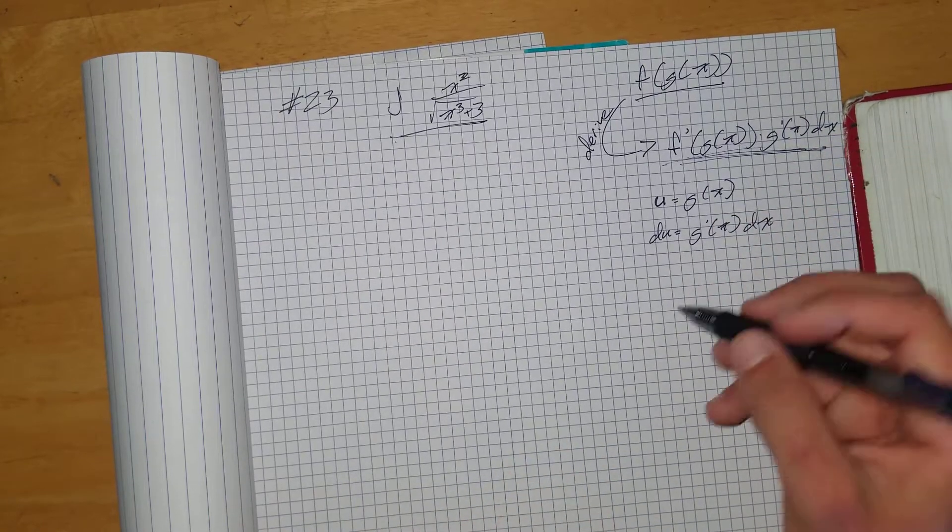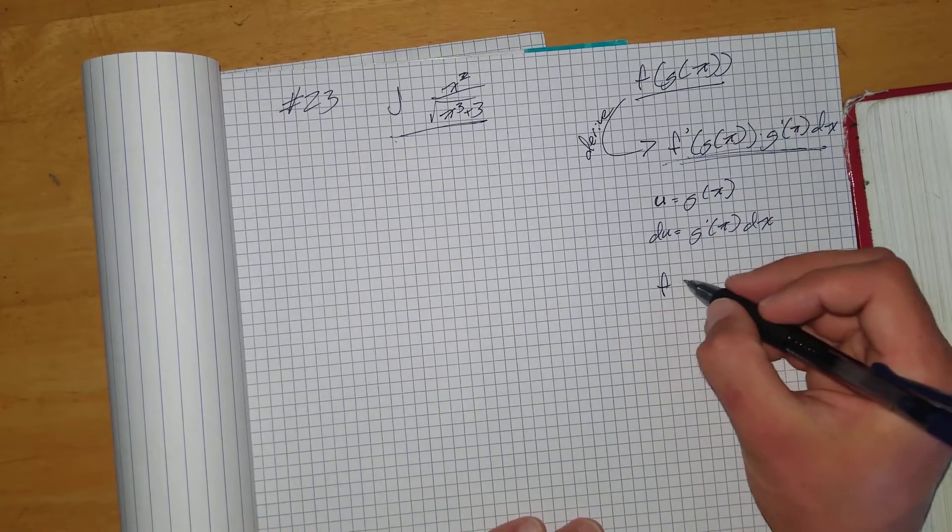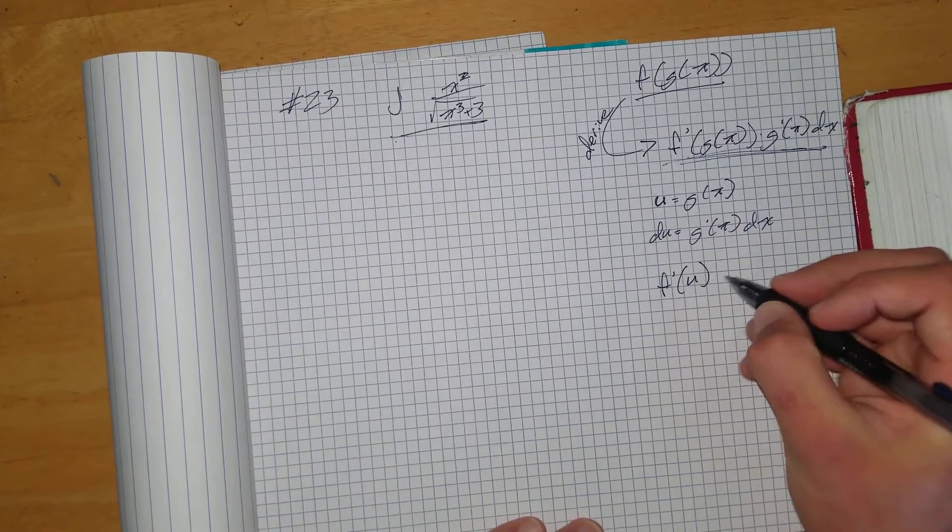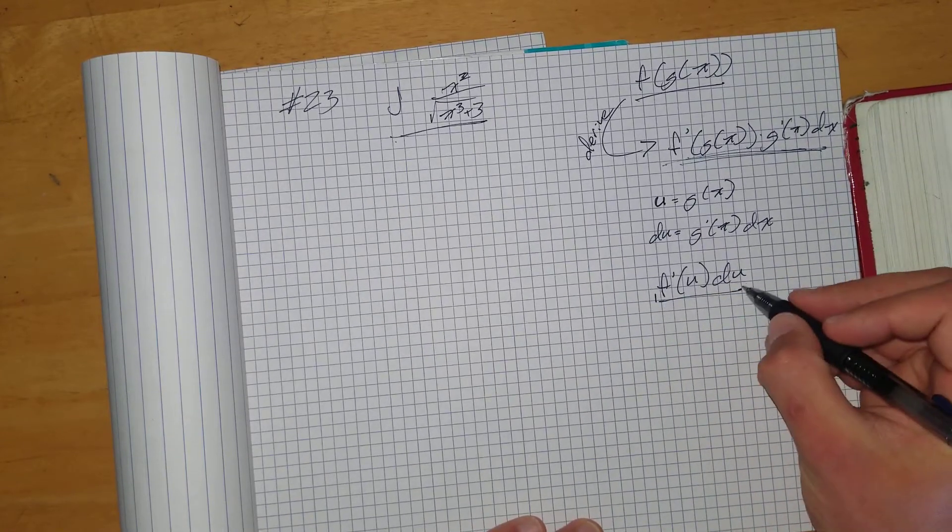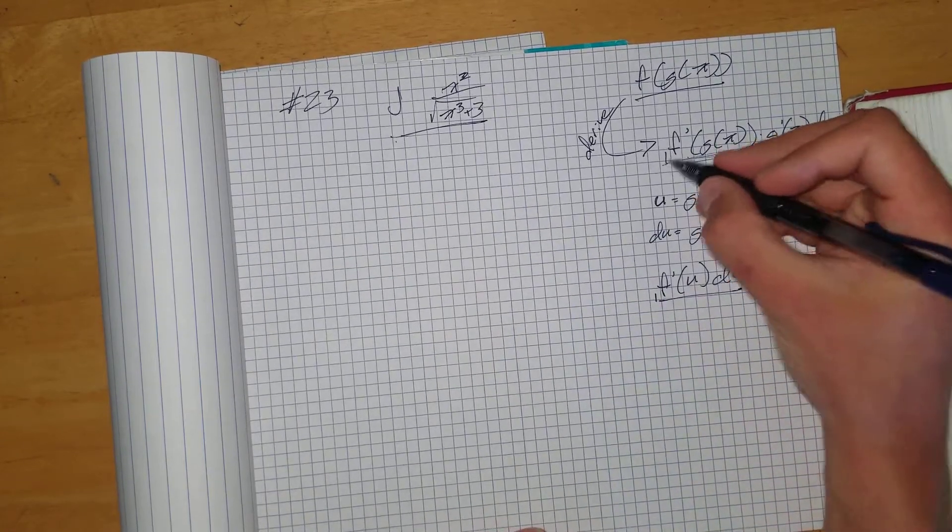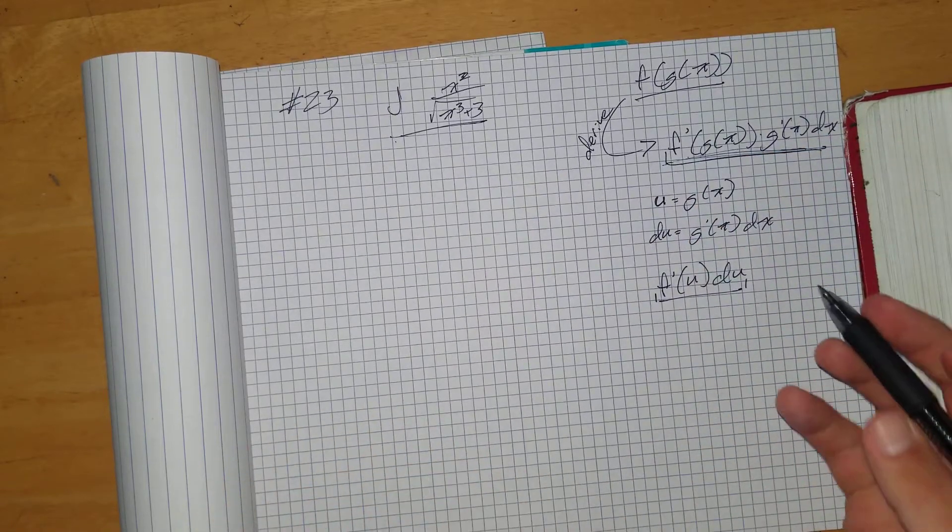So basically, once we sub this, it's going to look something like this. Now, this is much easier to deal with than this, which is why we use substitution.